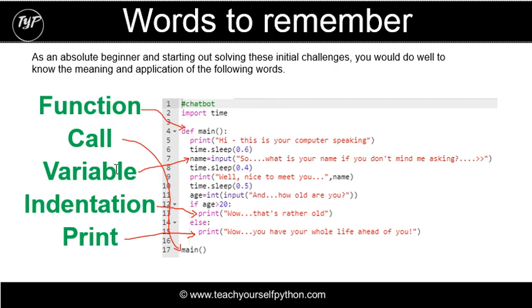A variable. Name is a variable, and a variable is simply something which stores a value. So in this case, name, which is a variable, is storing the user's name. Age is also a variable, and it's simply storing the user's age.